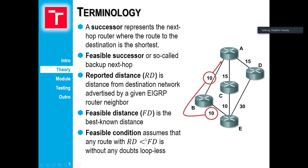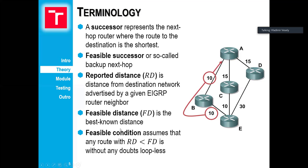EIGRP guarantees loop-free convergence under the feasible condition, which is satisfied whenever the reported distance is strictly lower than the feasible distance. Routes through B and through C satisfy these feasible conditions and under any given moment they provide loop-free routing to EIGRP.